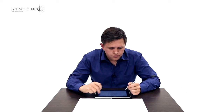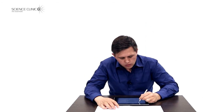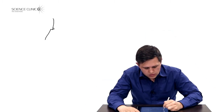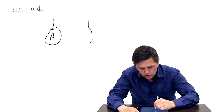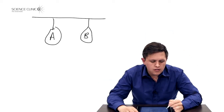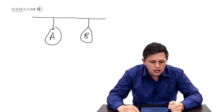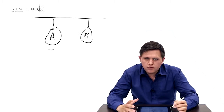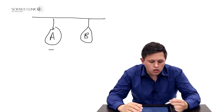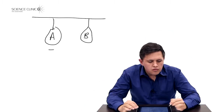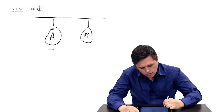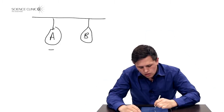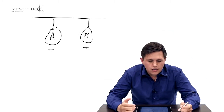Moving to the next question, a new diagram is given: a negatively charged balloon A is suspended, and another balloon B is nearby. We're told that A attracts B. From this we can already see that since there's attraction, the charges must be opposite. So balloon A is negatively charged and balloon B must be positively charged before we even look at the specific questions.